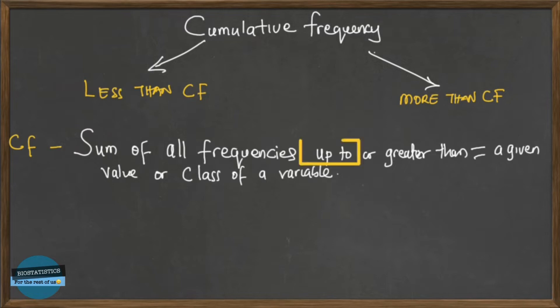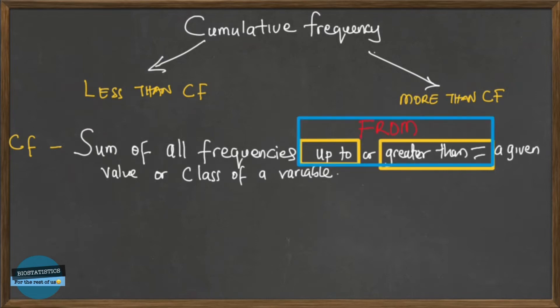I think the confusion comes from the words 'up to' and 'greater than or equal to.' I'm going to remove those and replace them with the word 'from.' So cumulative frequency is the sum of all frequencies from a given value of a variable. This makes it much simpler.